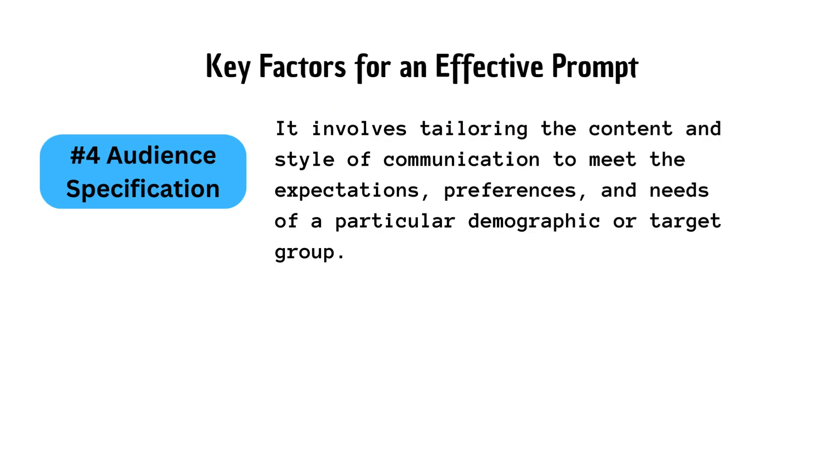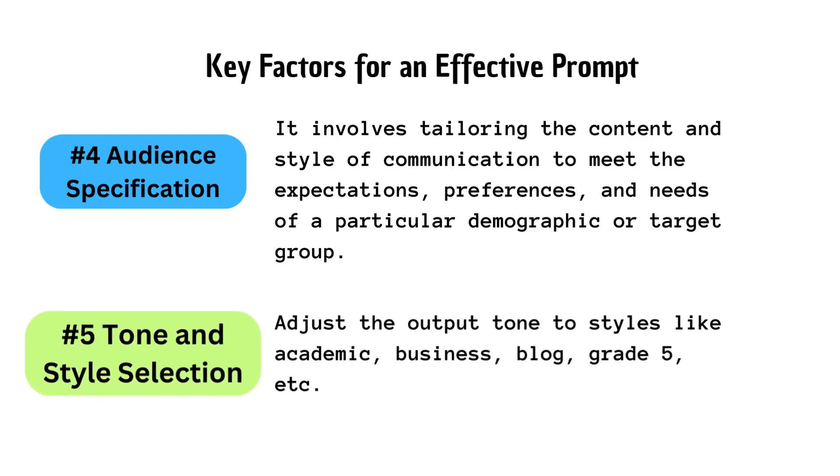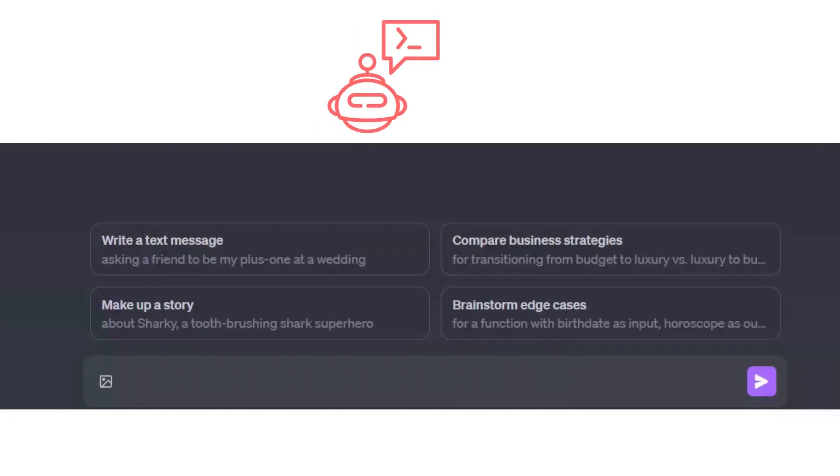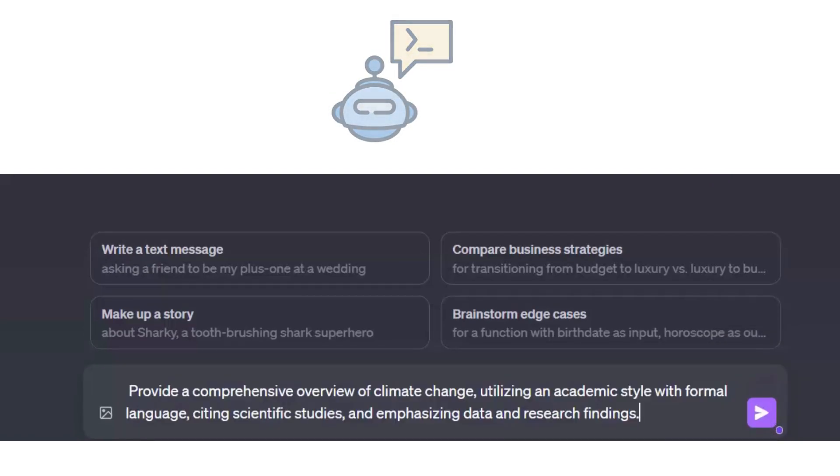Key factors for an effective prompt, number five is tone and style selection. Adjust the output tone to styles like academic, business, blog, grade 5, etc. For example, a basic prompt: Tell me about climate change. The refined prompt: Provide a comprehensive overview of climate change, utilizing an academic style with formal language, citing scientific studies, and emphasizing data and research findings.